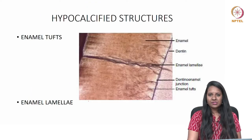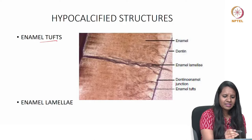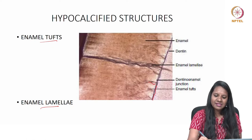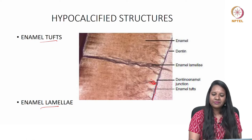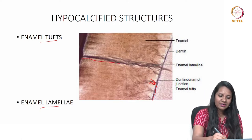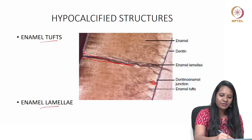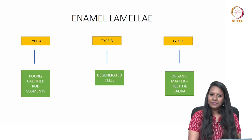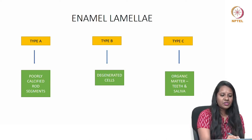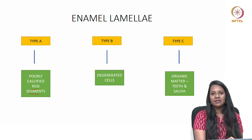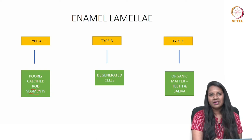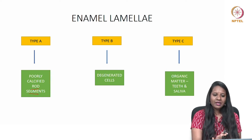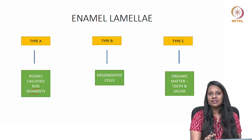Moving to hypocalcified structures: enamel tufts and enamel lamellae. Enamel tufts arise from the DEJ toward the enamel surface and have a tuft-like grass appearance, whereas enamel lamellae are cracks that appear from the enamel surface to the DEJ. Enamel lamellae are of three types: Type A consists of poorly calcified rod segments in the crack; Type B consists of degenerated cells; and Type C consists of organic matter derived from either the tooth or saliva. They differ by the content present in the crack.